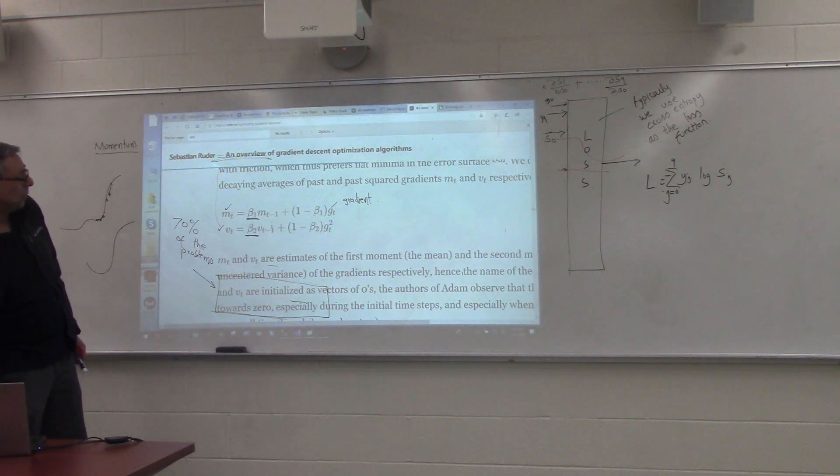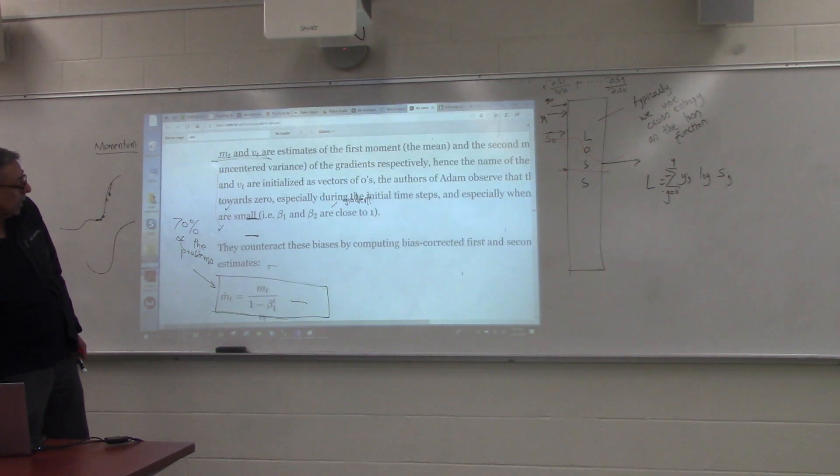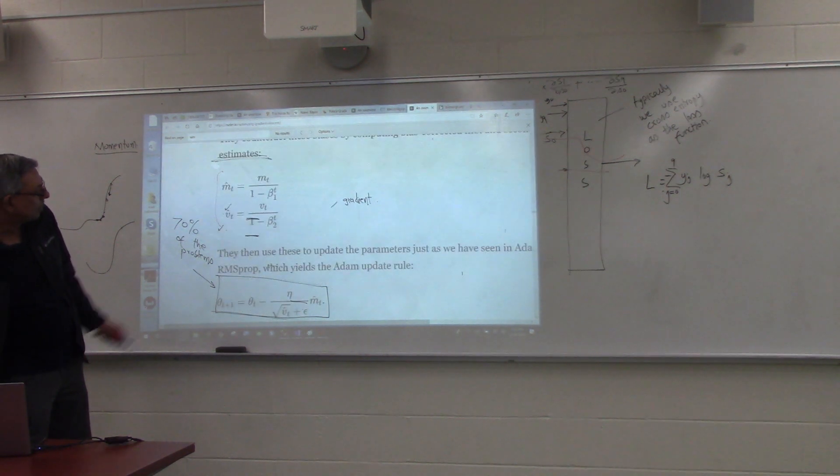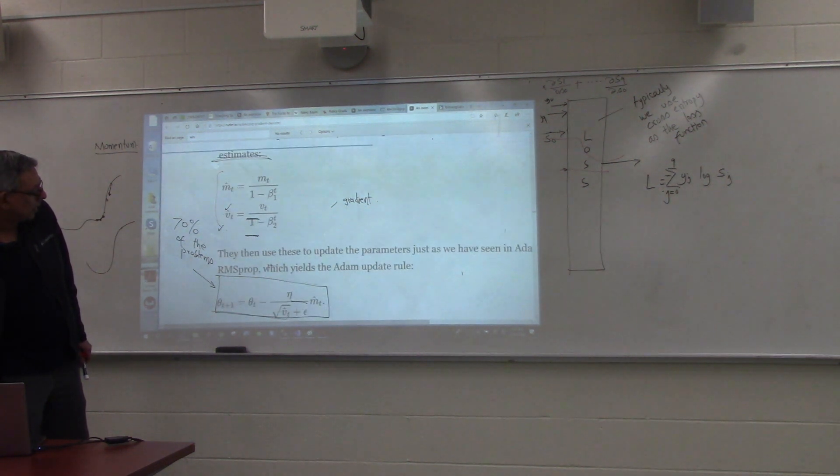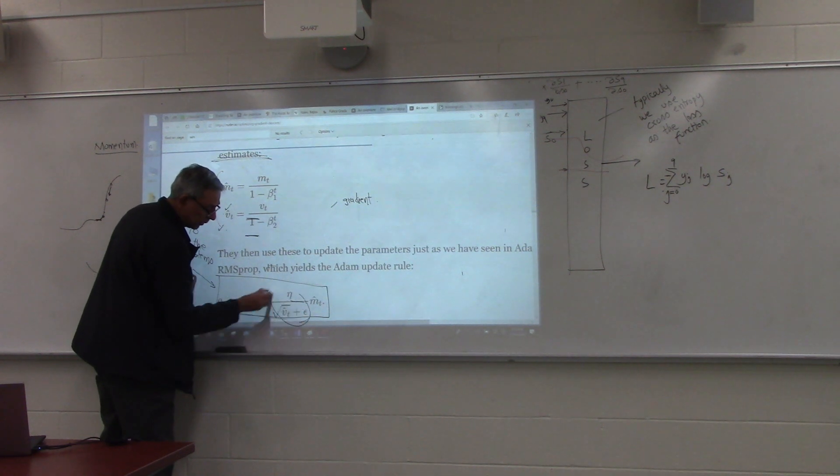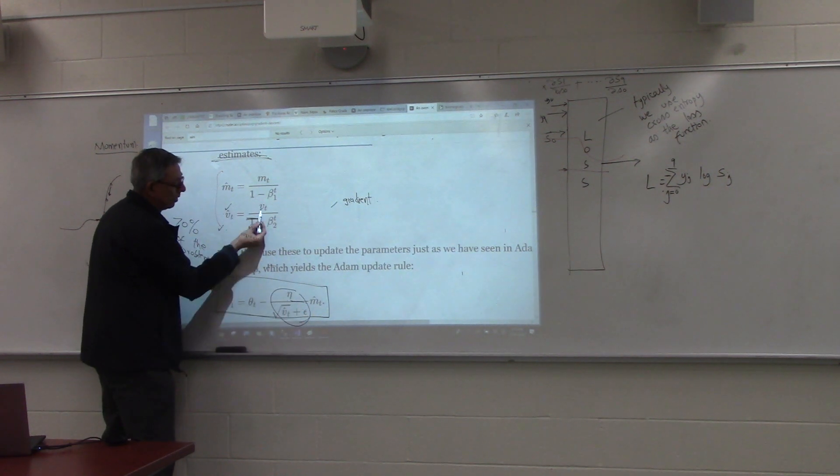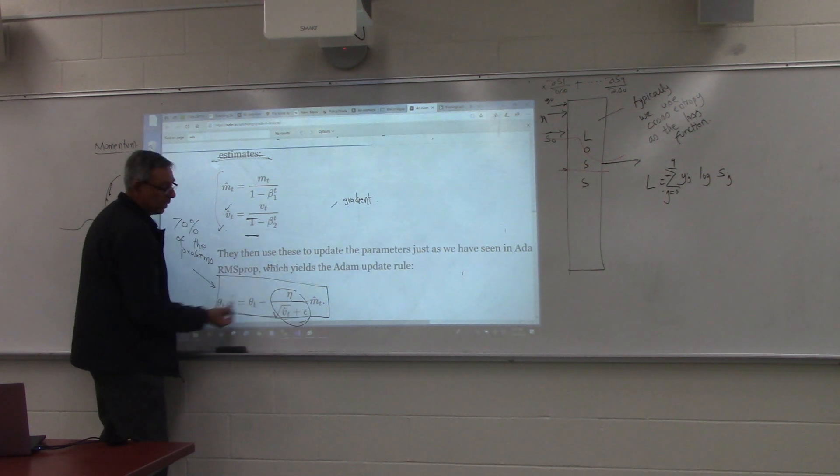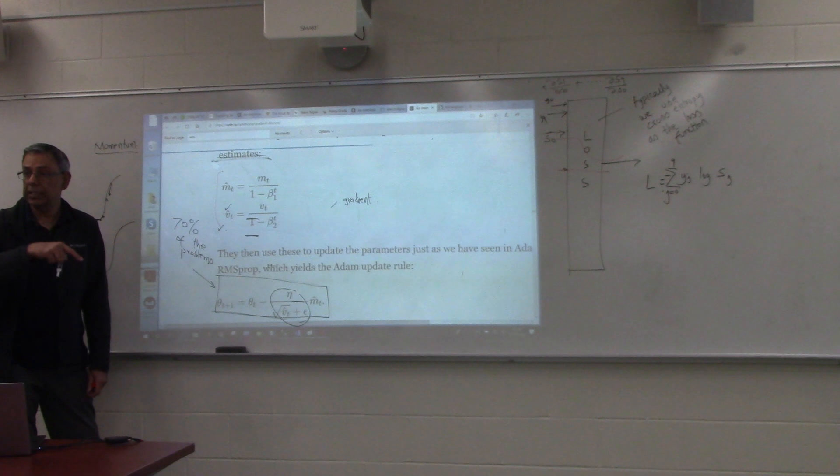So then, what will be your current learning rate? Again, mt vt can be easily calculated. Your current learning rate will be this much. Since we know vt hat, which is this, we can easily update the parameter.